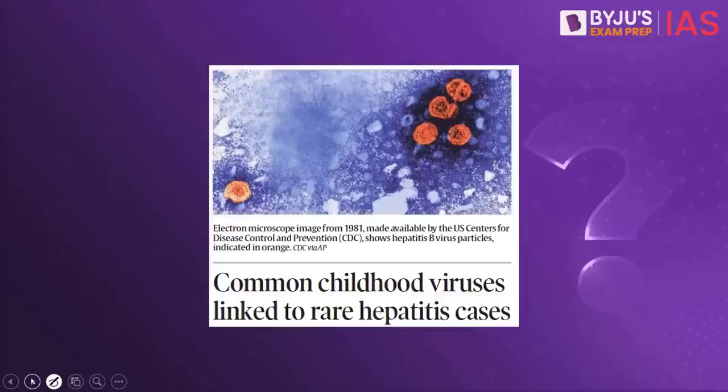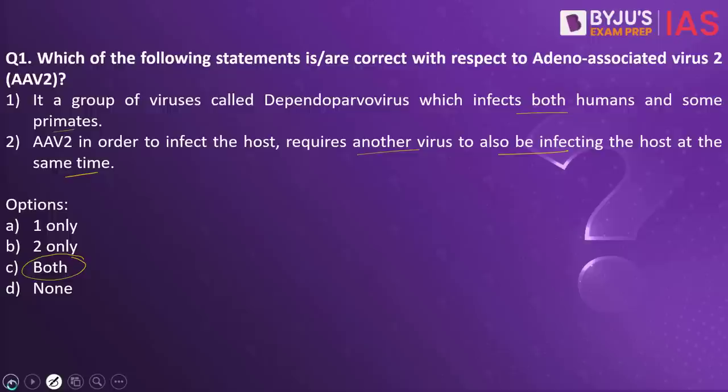Let us try and understand what these statements mean. When you look into the first statement, it says it is a group of viruses called Dependoparovirus which infects both humans and some primates. This statement is right. AAV are small viruses that do infect humans and also some primate species, and they belong to the genus Dependoparovirus, which in turn belongs to the family Parvoviridae. So the first statement is right.